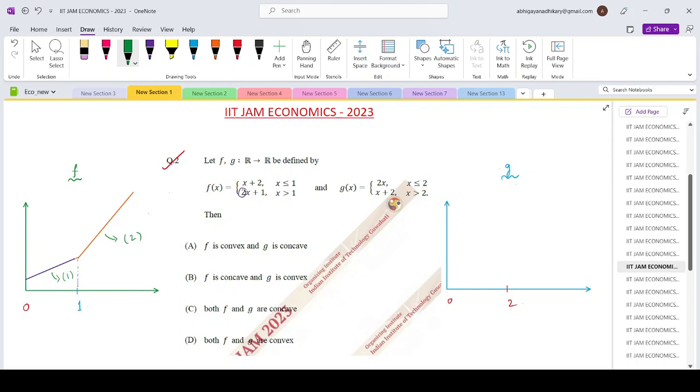In the exact same way if you look at function G, for x less than or equal to 2, the first part it is 2x. So it is steep, something like this.